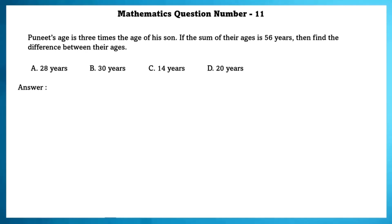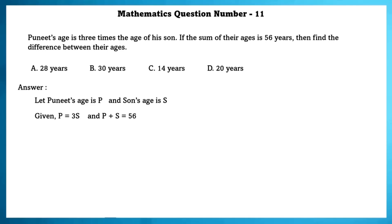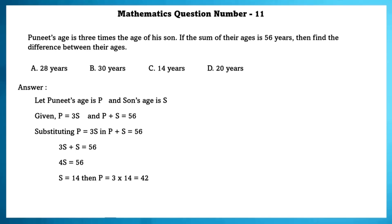Mathematics question number 11. Puneet's age is 3 times the age of his son. If the sum of their ages is 56 years, find the difference between their ages. Let Puneet's age = P and son's age = S. Given P = 3S and P + S = 56. Substituting, 3S + S = 56, so S = 14 and P = 42. The difference between their ages is 28 years.